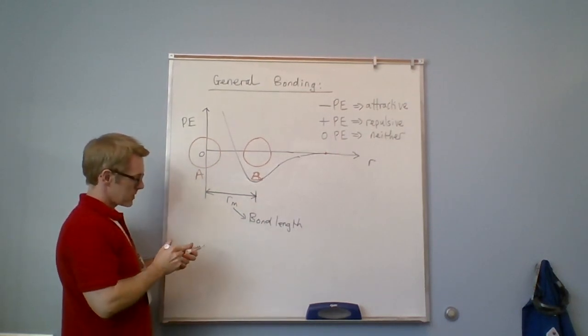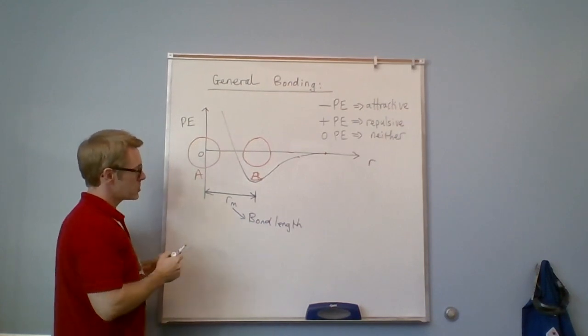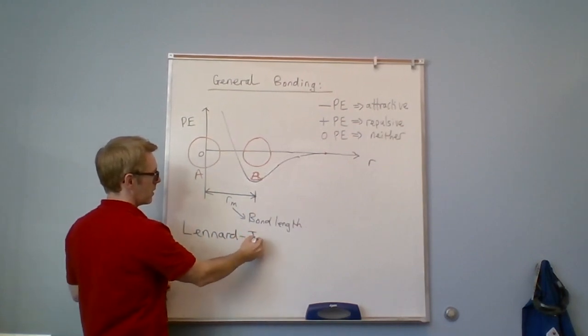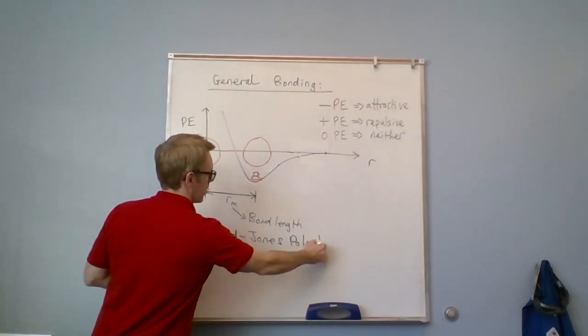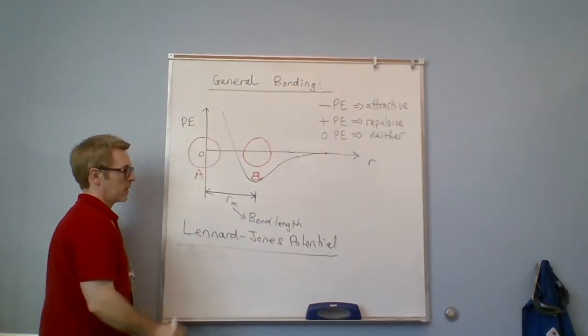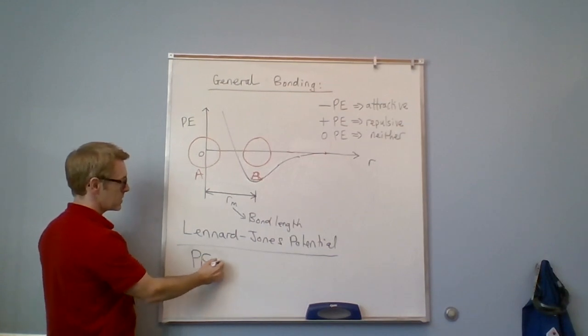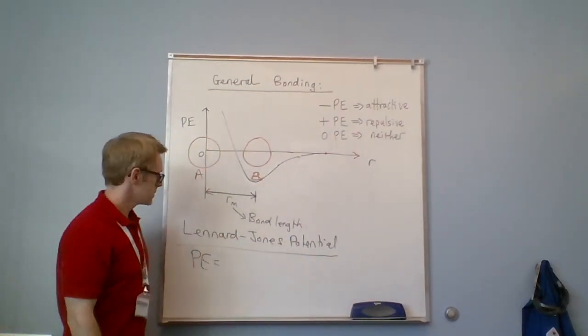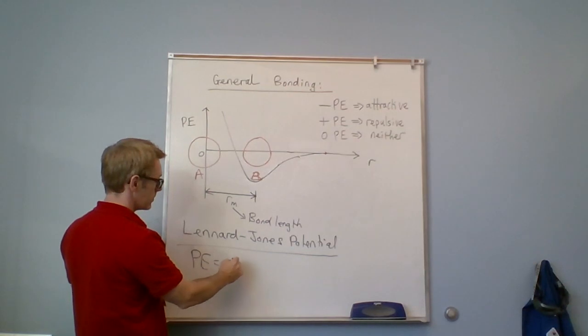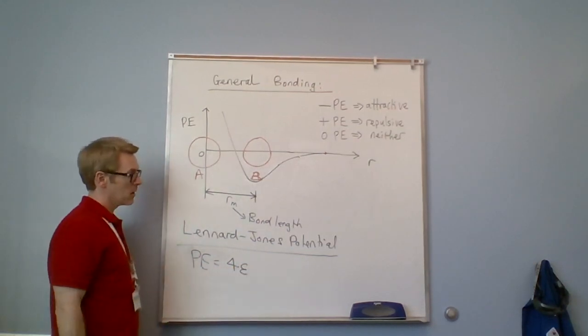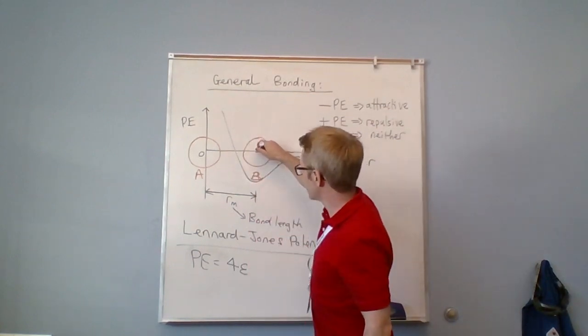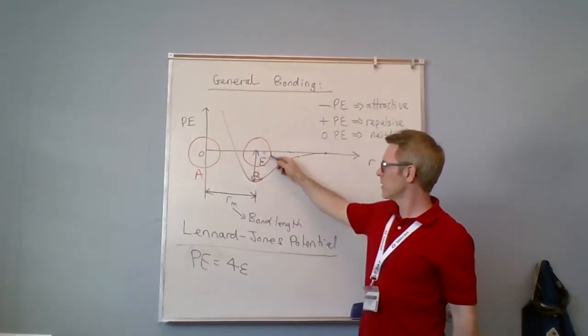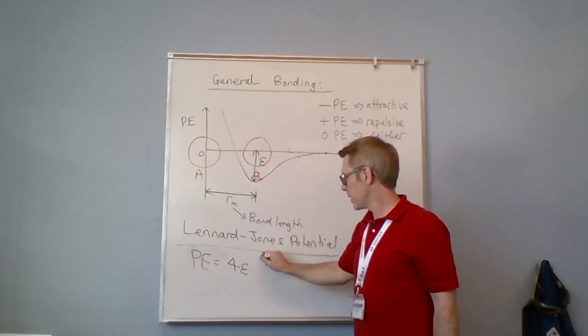To annotate this graph, this is a well-known plot, it's called the Lennard-Jones potential. Potential energy, it's going to look like a funny equation but it's very interpretable. So the Lennard-Jones potential is the number 4, the value epsilon. Epsilon essentially is the depth of this well, so it has units of potential energy. So it's 4 lots of the deepest part of that well, multiplied by the following: